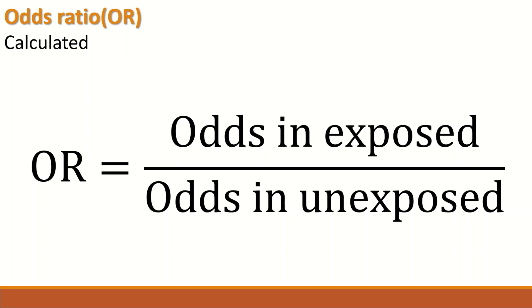The odds ratio is calculated as: OR equals the odds in the exposed (experimental or intervention group) divided by the odds in the unexposed (the control or reference group). The OR is different from odds — odds is the probability of an event occurring relative to the probability of it not occurring, while the OR is the odds in the exposed relative to the odds in the unexposed.